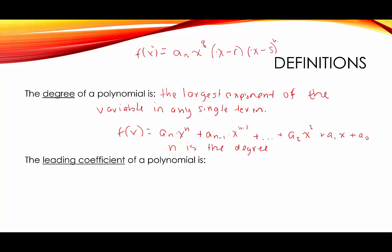And there could even be an exponent — let's put a w up there — times (x − t)^v. So if it looks like this where it's in factored form, the way we would calculate the degree — so again the degree is the largest exponent of any single term — we know that if we multiply each term within each factor that has the largest exponent, that's going to give us the degree. So here we would take a_n times x^q, and then within this factor x has the largest exponent.